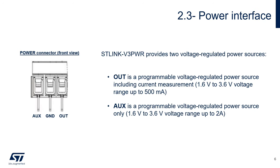Now let's talk about the power interface. This interface allows supplying the target application via two independent programmable power sources: OUT and AUX. OUT is the programmable voltage regulator used to power the source and measure the target current consumption. AUX is an additional programmable voltage regulated power source which can be used, for example, to supply some application peripherals.